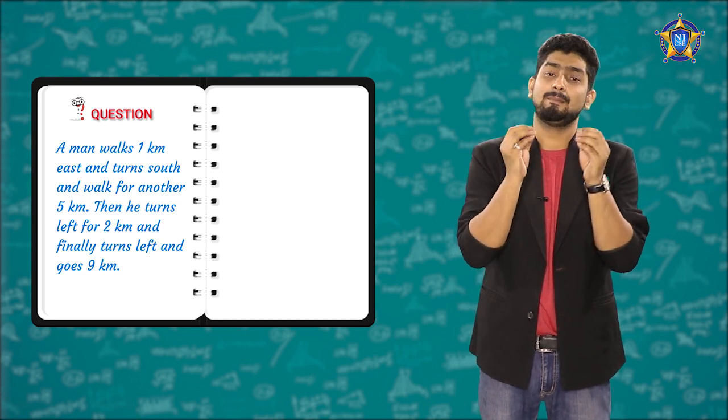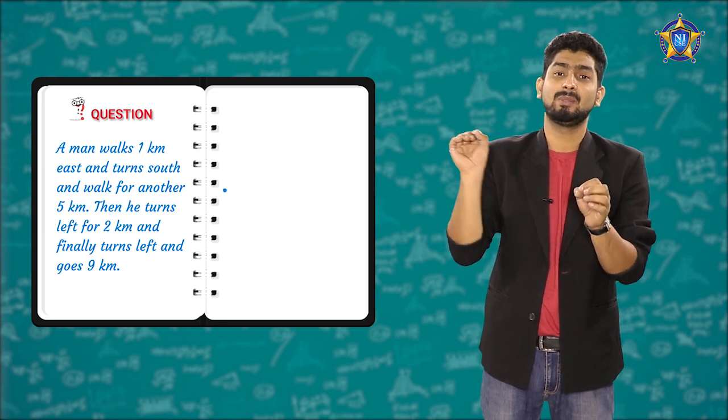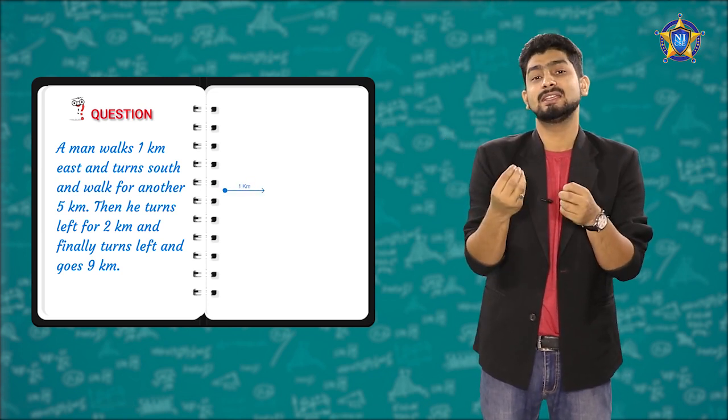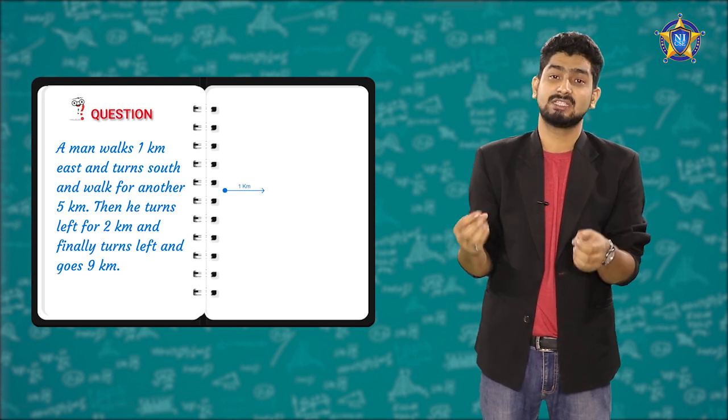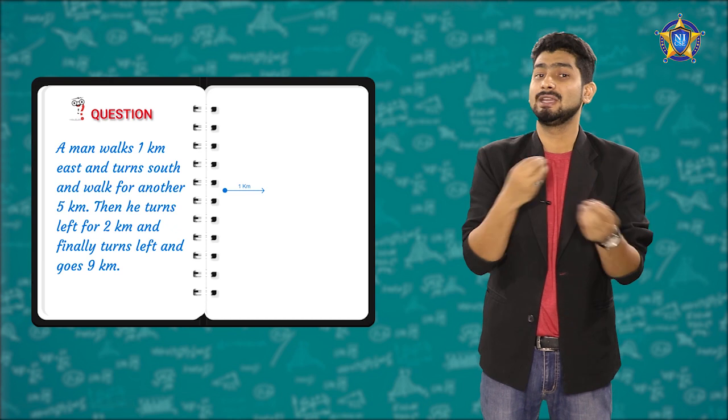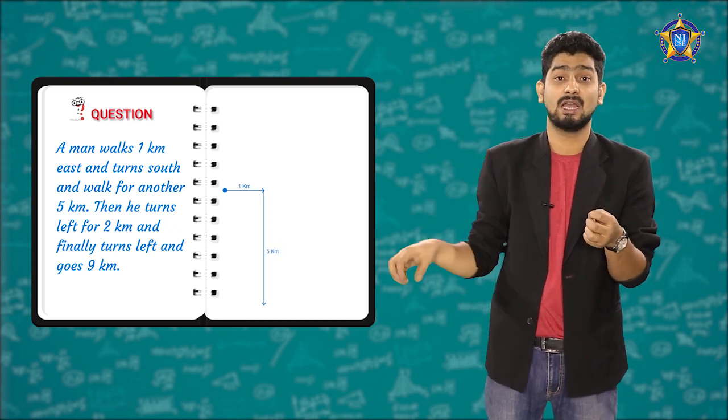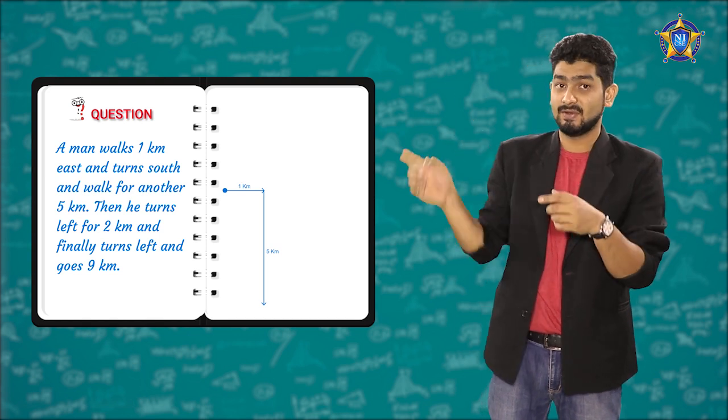First, it says the man walks 1 kilometer east. What will happen? Like that. After that, it says the man turns towards south. Like I told you, when south is mentioned, whichever way he is going, it doesn't matter. He will go south, 5 kilometers downwards. Done. This is 5 kilometers south.